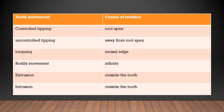This table represents tooth movement and center of rotation. In controlled tipping, the center of rotation is at the root apex. In uncontrolled tipping, it is away from the root apex. In torquing, the center of rotation shifts to the incisal edge. In bodily movement, the center of rotation is at infinity. For both intrusion and extrusion, the center of rotation is outside the tooth.